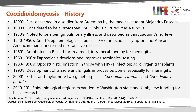In the 2000s, Fisher and Taylor noted that there were two genetic species, C. imidus and C. posidaceae. And since then, we have noted that the epidemiologic regions may have expanded, particularly to eastern Washington state and northeastern Utah.